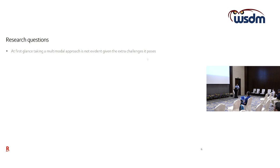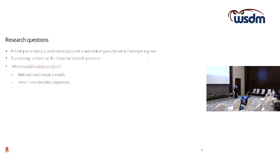The first thing we had to clarify is whether we need a multimodal approach at all. If we can use only textual information to predict attribute values, why would we use a more complicated model including images? The first research question is about which modality to use, and to answer it we needed to build solid single-modality models and perform cross-modality comparisons.